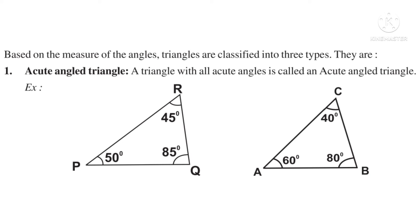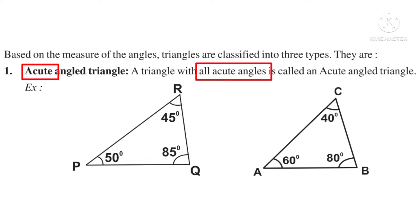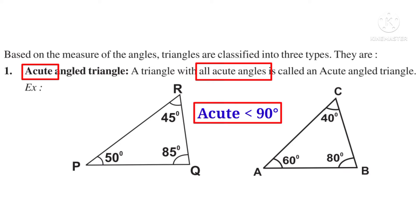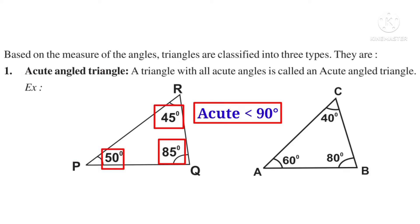Now, based on the measure of angles, triangles are classified into three types. Number 1: Acute Angled Triangle. Observe — acute means angles which are less than 90 degrees. An acute angled triangle is a triangle with all acute angles. For example, in triangle PQR, angle P is 50°, angle Q is 85°, angle R is 45° — all are less than 90 degrees — so it is an acute angled triangle.